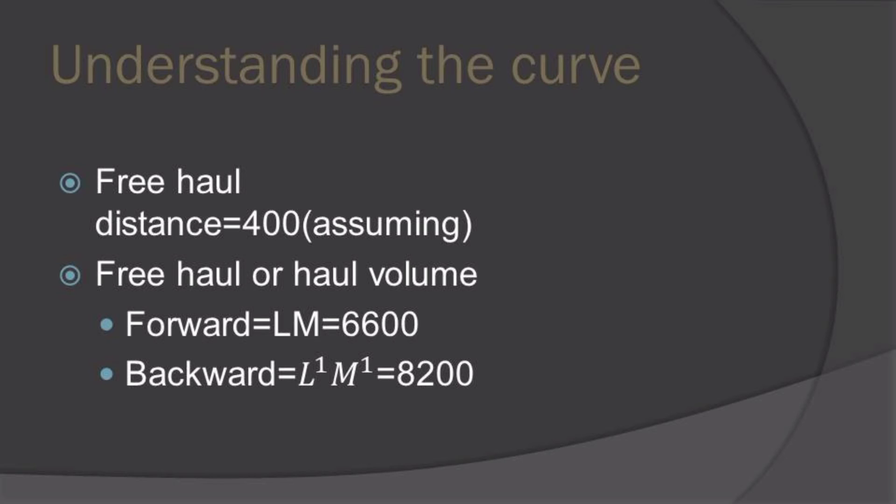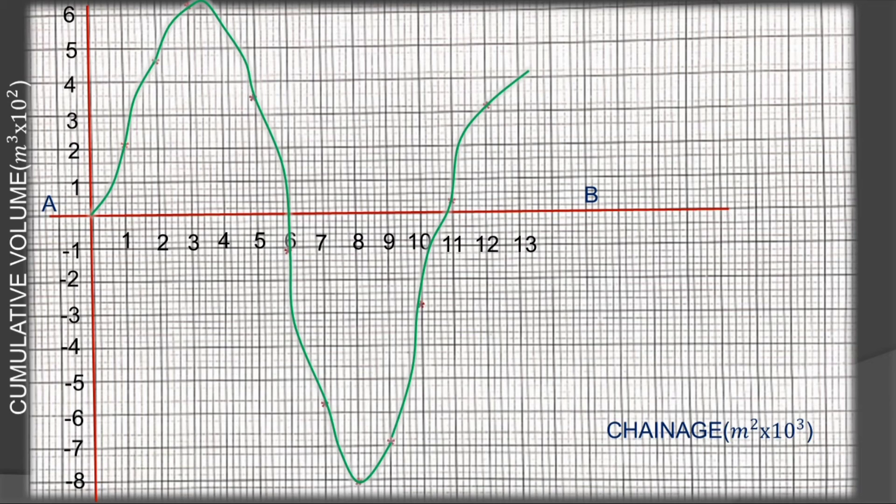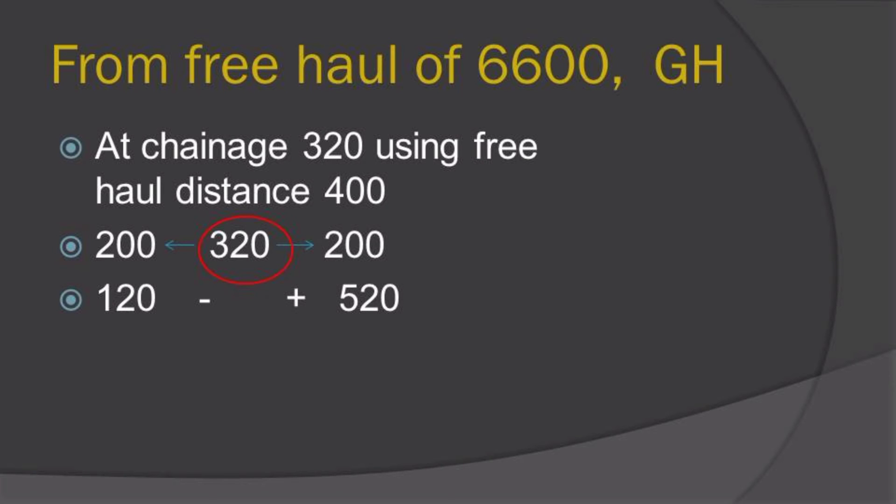Again we can obtain both our backward and forward free hauls from the peak of our curves. In simple terms, the top of the curve provides them. So the top of both curves, the fill and the cut, will provide our backward free haul and our forward free haul, giving us a forward free haul of 6600 meters cubic at chainage 320 meters. All that can be seen in the curve. And the backward free haul of 8200 meters cubic at chainage 820 meters, seen there on the curve.